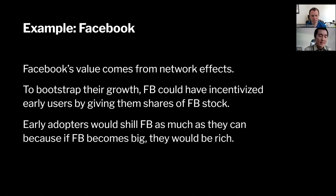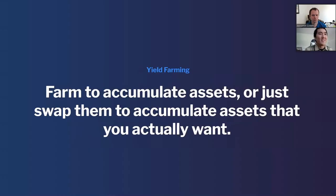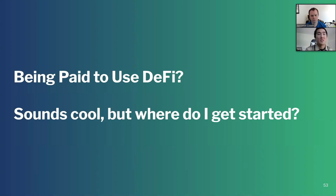Early adopters with Facebook stock would promote it as much as possible because if Facebook became successful they'd be rich. Similarly, these protocols have no liquidity to begin with, so to incentivize users they say: provide liquidity and we'll give you tokens. With those tokens you can accumulate them to speculate on future price, or just dump them for an asset you actually want — like stacking sats, buying ETH, or converting to dollars.